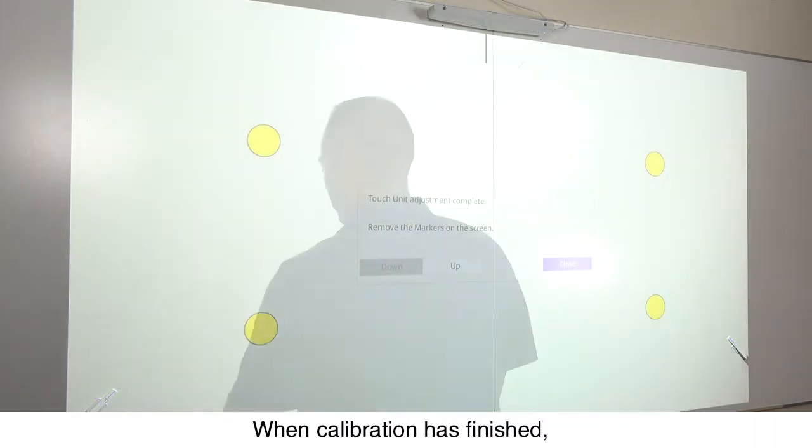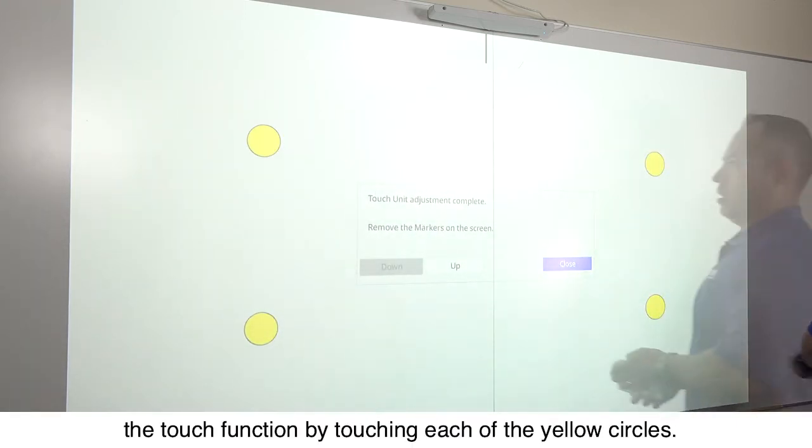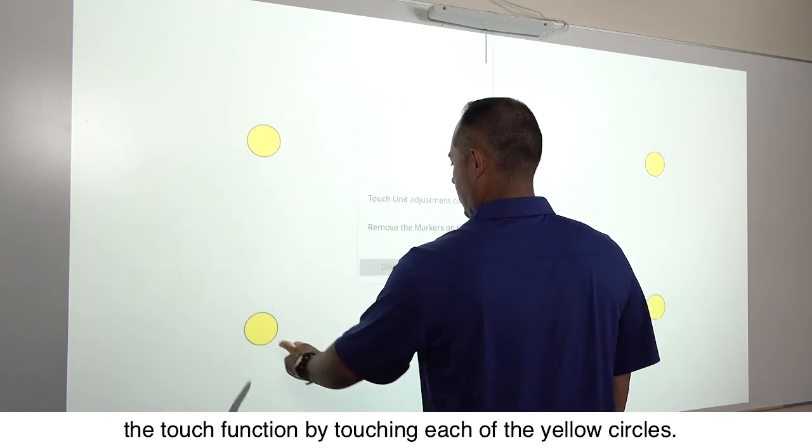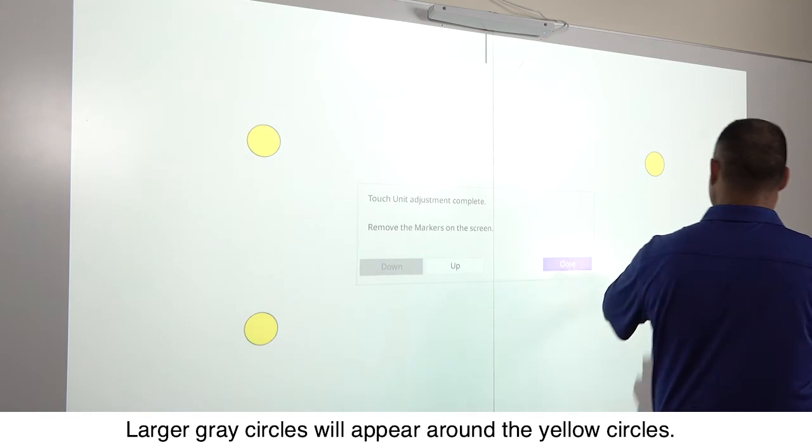When calibration has finished, remove the markers. Then test the Touch function by touching each of the yellow circles. Larger gray circles will appear around the yellow circles.